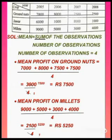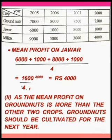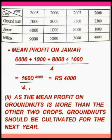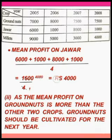Still we have to find the mean profit on Java. Now let us find it. Sum of the observations by number of observations. The sum is 6000 plus 1000 plus 8000 plus 1000, which is equal to 16,000. So 16,000 by 4 — if you cancel with the 4 table, you will get 4000 rupees. The mean profit on Java is equal to 4000.